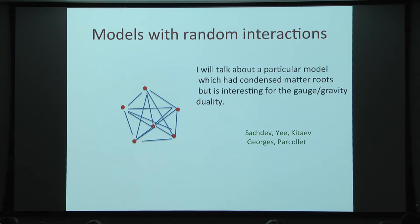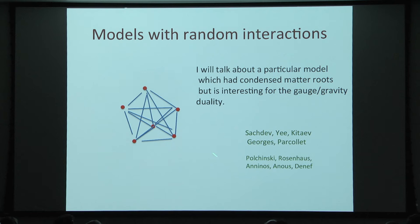Now comes the second part — models with random interactions. I will talk about a particular model that has condensed matter physics roots, but is interesting for gauge-gravity duality. Subir pointed this out a few years ago, and he and Yi had proposed a certain model that has an interesting conformal limit in the infrared. Georges and Parcollet also did a lot of work on this model, as well as Kitaev who did some interesting contributions. Recently there have been a few papers on this model and related ideas. The new things I'll discuss will be in a paper I'm writing with Douglas Stanford, but most of what I discuss here will be a review of this model.